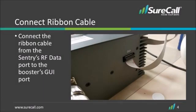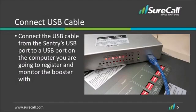The first step in installing the Sentry device is to connect the ribbon cable from the Sentry's RF data port to the booster's GUI port. Step two, connect the USB cable from the Sentry's USB port to the USB port on the computer you are going to register and monitor the booster with.